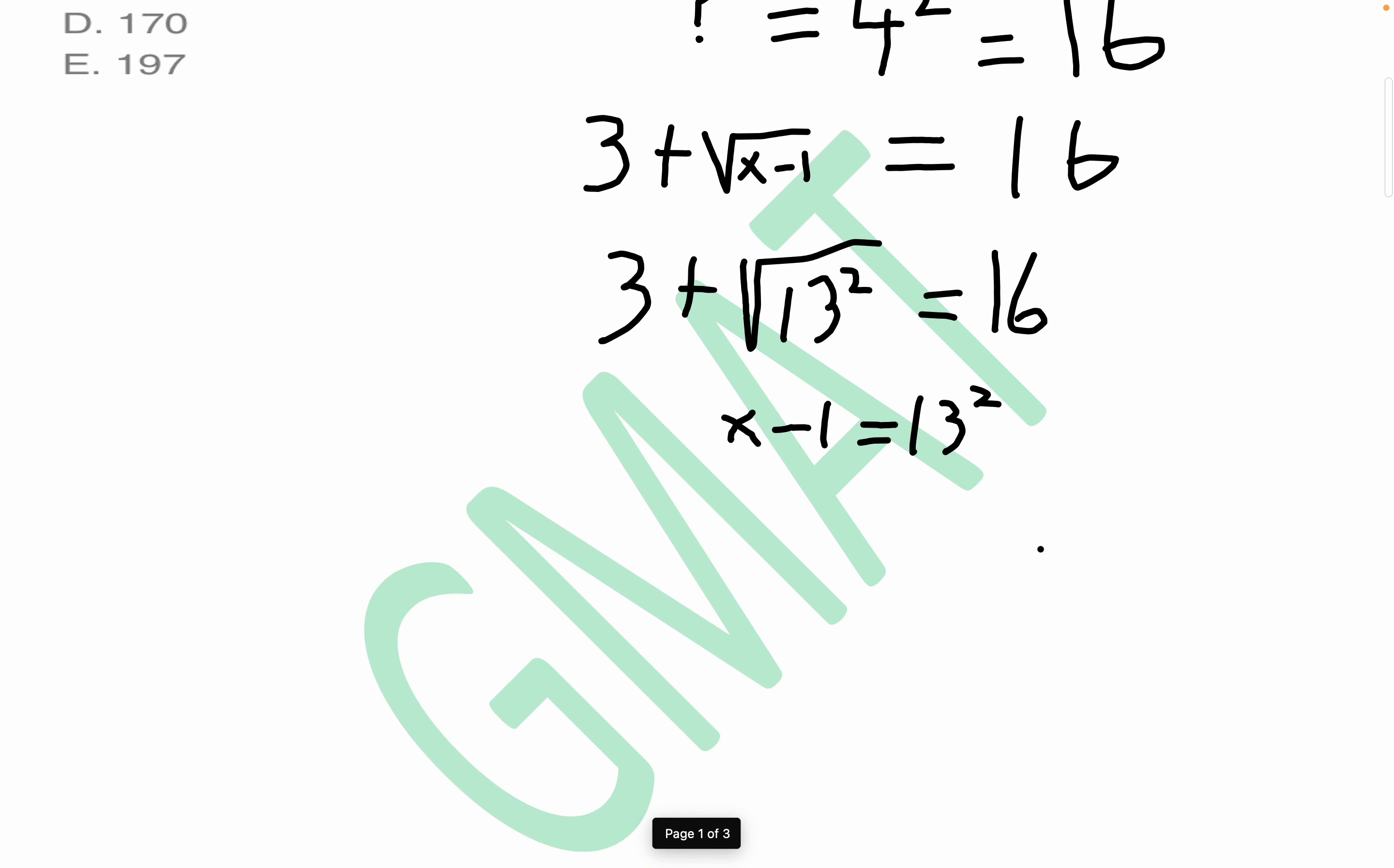13 squared happens to be 169, so what we get is x minus 1 equals 169. That implies that x equals 170 when you add 1 to both sides.